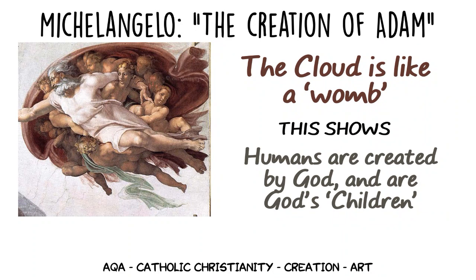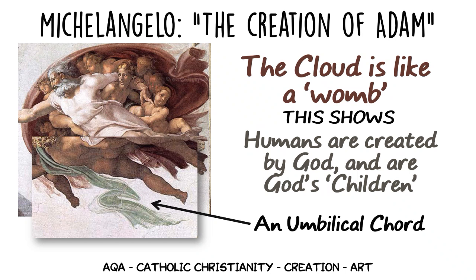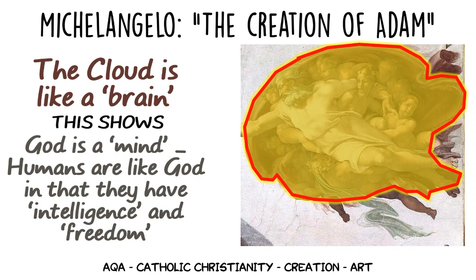The cloud upon which God is sitting has been likened by some to a womb. The green cord floating below could be a representation of an umbilical cord. Some think that this shows the idea that God is the creator and humans are God's children, born from the womb of God.